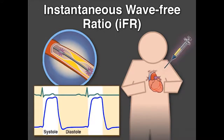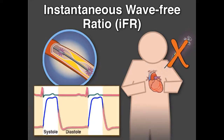The instantaneous wave-free ratio, or IFR, is a technique for assessing stenosis severity that does not require the use of adenosine. IFR is calculated during only one part of the cardiac cycle, in mid to late diastole.